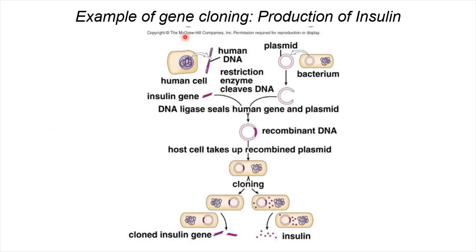An example of gene cloning is the production of human insulin. Most diabetic patients, especially type 1 diabetic patients, require a ready supply of insulin. Earlier, insulin was produced from animal sources, which could trigger allergic reactions. But with the discovery of gene technology, large amounts of human insulin can now be produced easily.